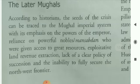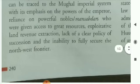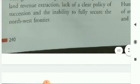According to historians, the seeds of the crisis in the later Mughals can be traced to the Mughal imperial system, with its emphasis on the powers of the emperor, reliance on powerful mansabdars and subedars who were given access to great resources, exploitative land revenue extraction, lack of a clear policy of succession, and the inability to fully secure the North-West frontier.